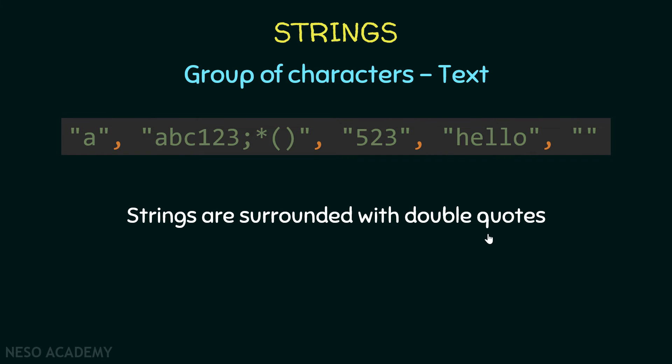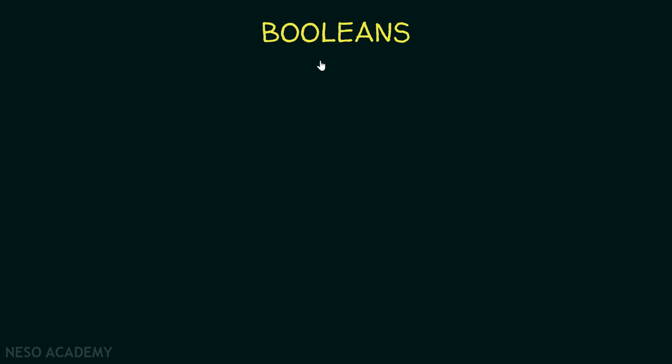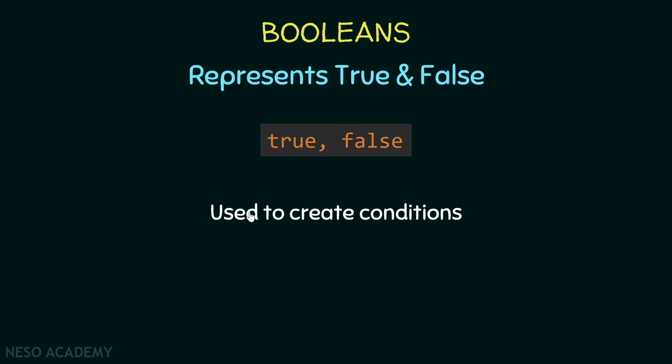Now let's talk about booleans. A boolean is a value that represents true and false, only two values. Inside Java, we can write the keyword true and the keyword false. Now you might ask, why do we need true and false in programming? Basically, they are used to create conditions, so we can start executing a piece of code based on a condition. We will see this later on.